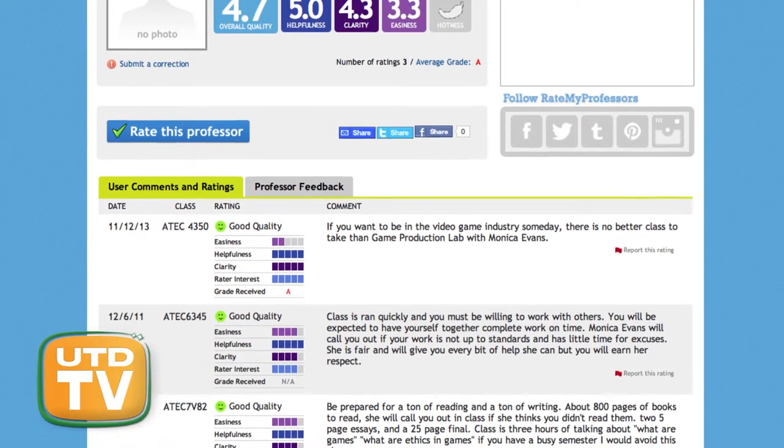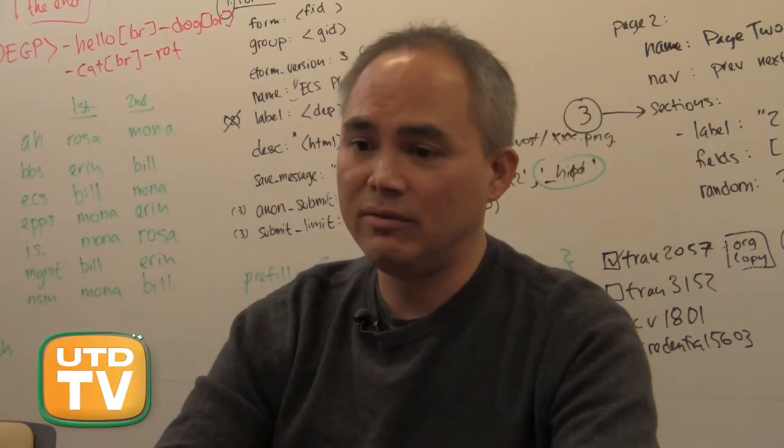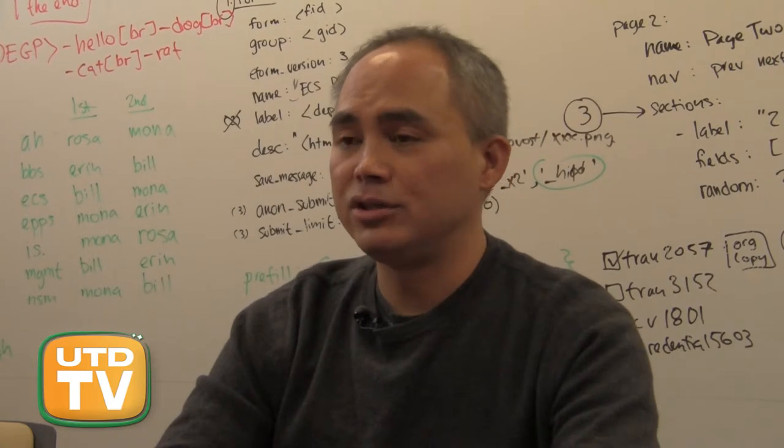Many students say they prefer RateMyProfessors.com to the UTD-sponsored evaluation system. Students cite the comments feature: 'The average scaling is good and the comments are helpful — because you can write your comments on there and it shows them. Coursebook doesn't show comments, so with the comments it would be really helpful. Putting comments out for everybody to view would be a lot more helpful than just giving numbers. That's why RateMyProfessors is so popular.' However, Assistant Provost Kane notes that evaluation comments are considered private information and are not publicly shared.